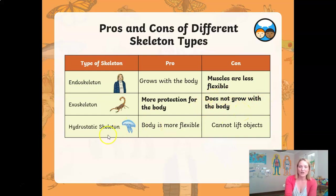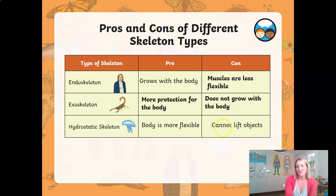For the hydrostatic skeleton creatures, their body is extremely flexible and can be squished, stretched, and moved in many different directions. However, unfortunately, because they don't have bones, they can't really lift anything.